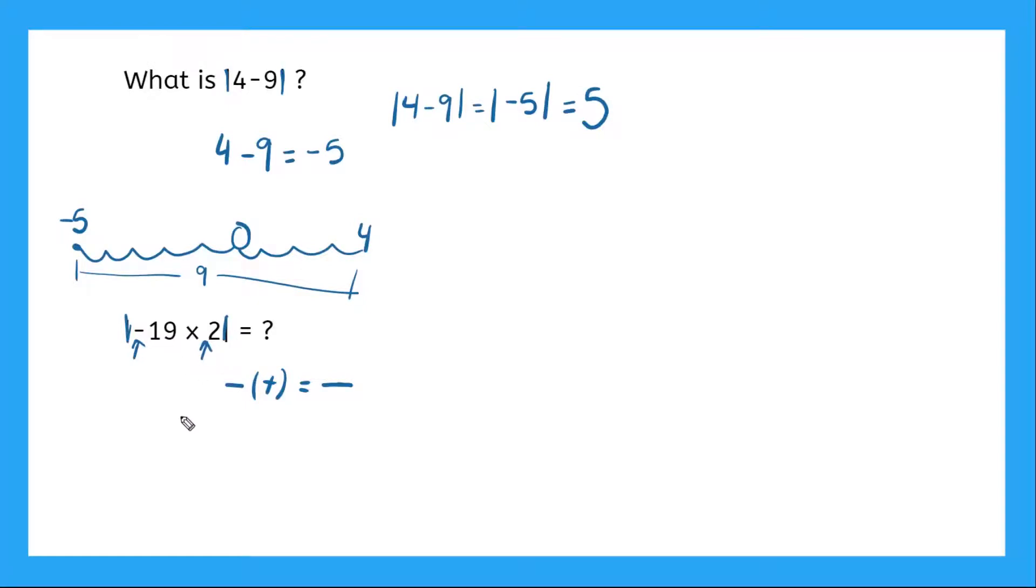So what's 19 times 2? Do you know it off the top of your head? Yeah, it's 38. But since this is a negative number, it's going to be negative 38. So negative 19 times 2 is equal to negative 38. And I can plug that in here to my absolute value brackets. I'm trying to find the absolute value of negative 38. What does that equal? How far from zero is negative 38? Yeah, that's right. It's just 38 spaces. So the absolute value of negative 38 is positive 38.